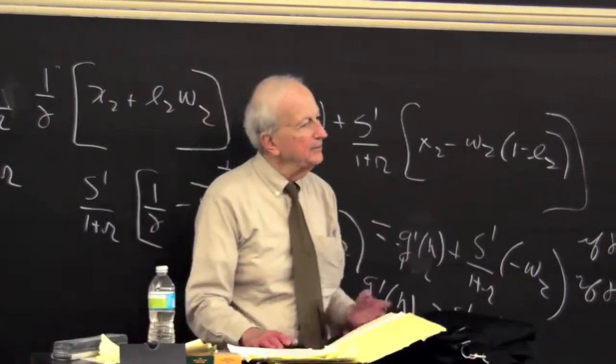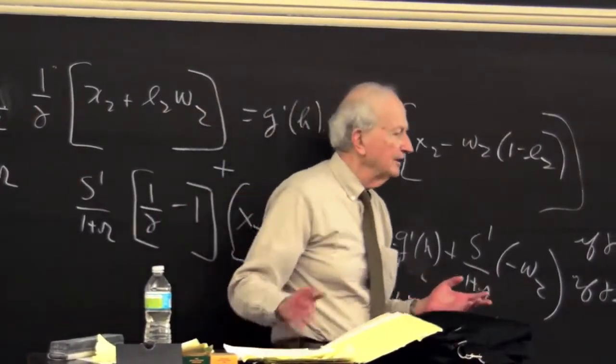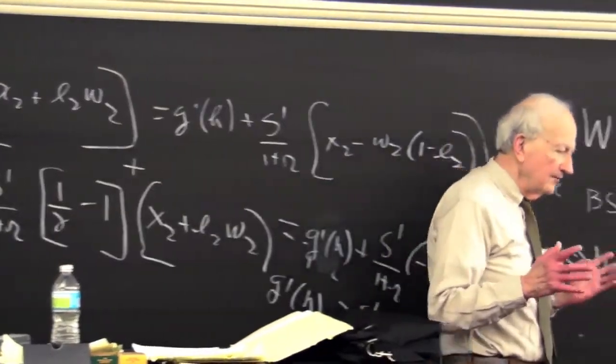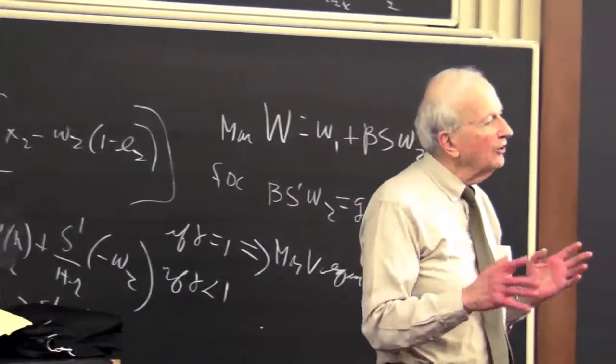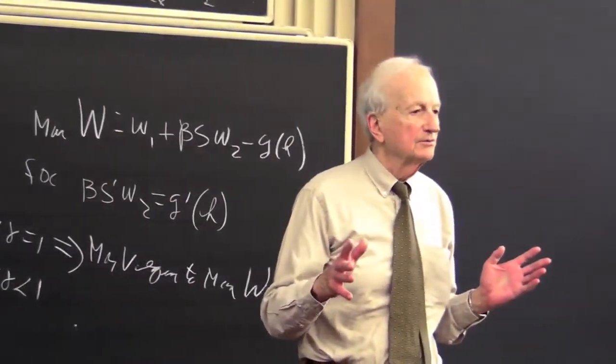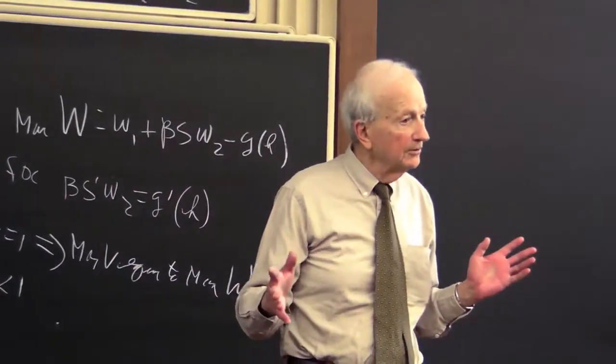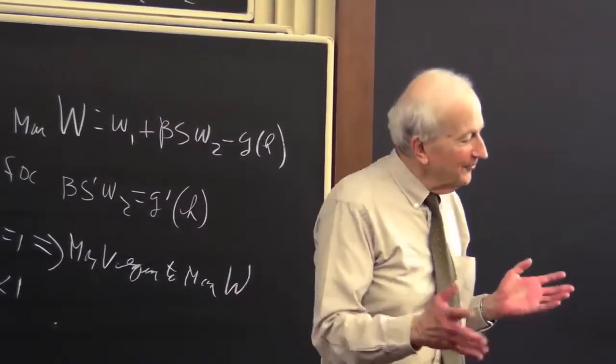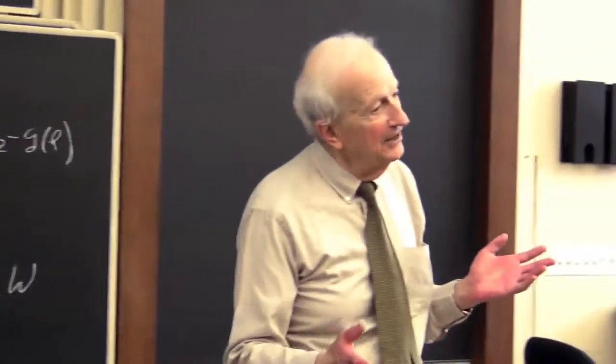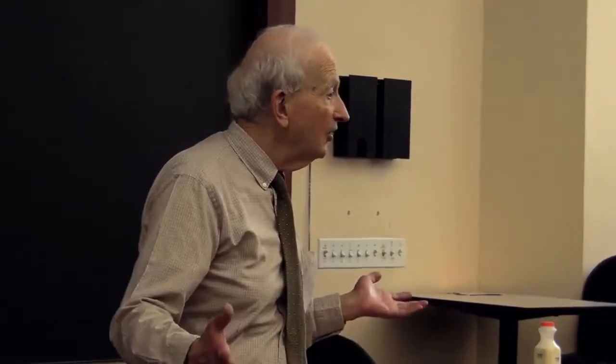Another way to put it: if gamma equals 1, all you have to do is estimate full consumption. That's doable — from an analytical point of view, that would be great. Estimate the wage rate; you measure the value of leisure time by the wage rate. Perfectly legitimate in that case. Add it to consumption and you have everything in monetary units.